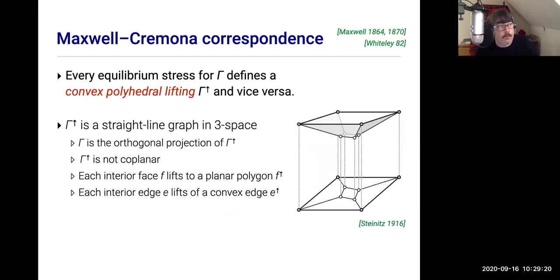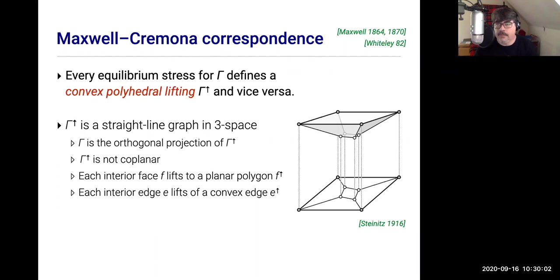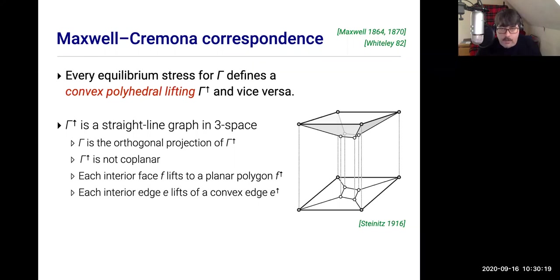The second thing Maxwell showed is that if you have an equilibrium stress on a planar graph with all stresses positive, then the graph has a convex polyhedral lifting: you can assign a Z-coordinate to every vertex so that in 3D, every face lifts to a polygon lying in a common plane, and every interior edge lifts to a convex edge between the two facets. Both of these theorems are if-and-only-ifs — Maxwell proved one direction, and Walter Whiteley proved the converse about a hundred years later.